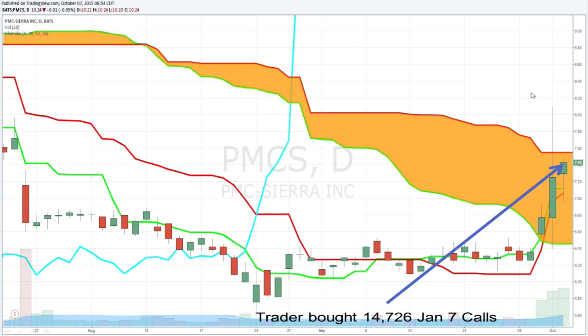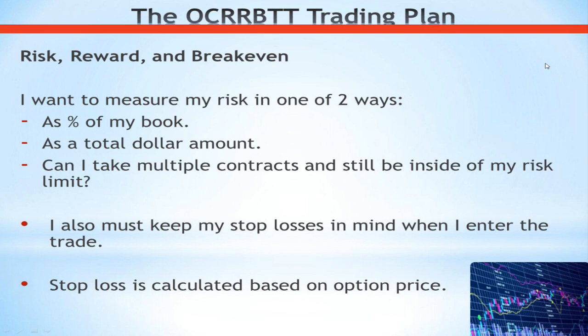Once I determine that this is most likely a speculative bet and most definitely an opening position, I then need to figure out if the trade fits in with all of my risk and reward tolerances and whether I can put risk capital into it. I have to measure my risk either as a percentage of my book or as a total dollar amount. If I have a $10,000 trading account and don't want to risk more than 5% in any one position, and I see an unusual options activity trade where options are being bought for $2, can I buy a four-lot and still be inside my risk parameters? No, I can't.